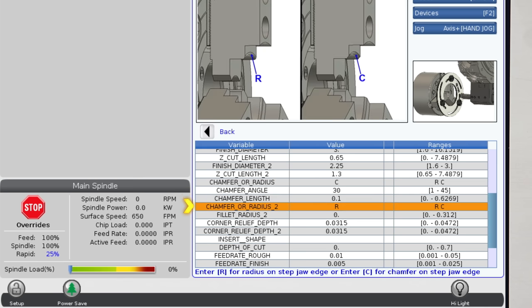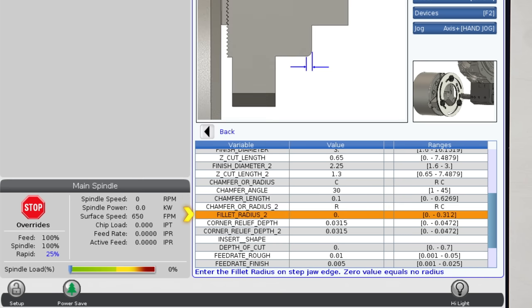The next row is again asking for the edge feature, but this time it's for the second step. We will leave this as a radius and we will enter 50 thou here, 1.27 millimeters.